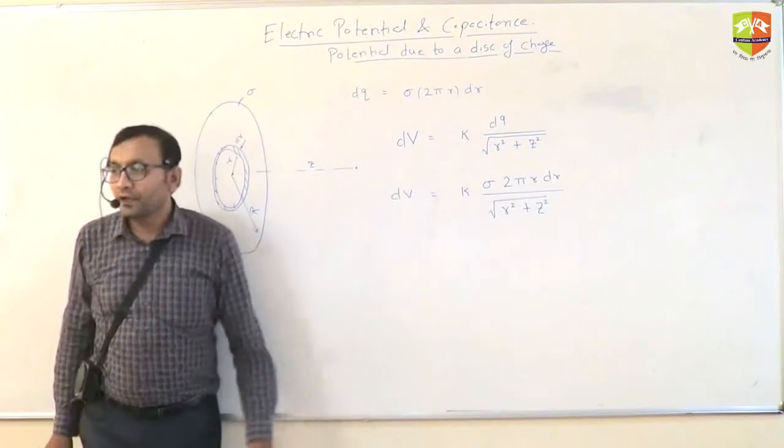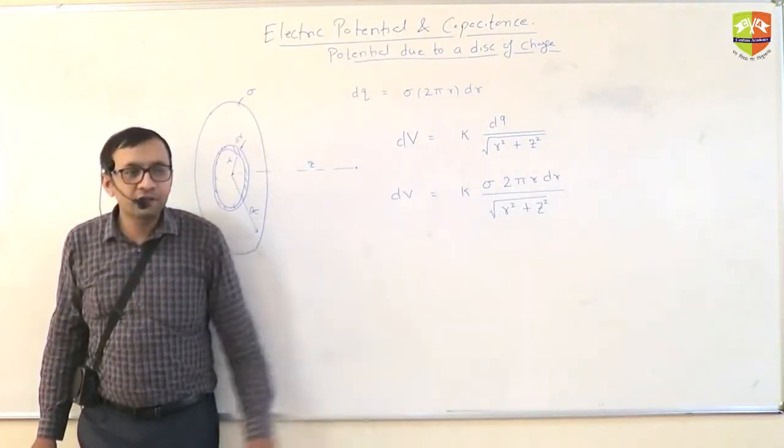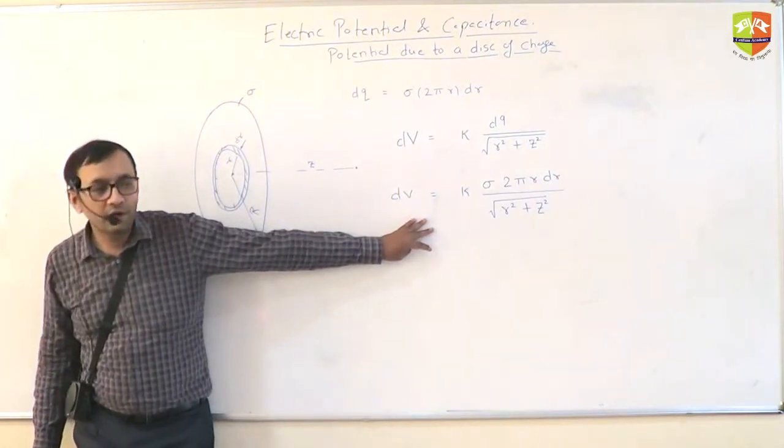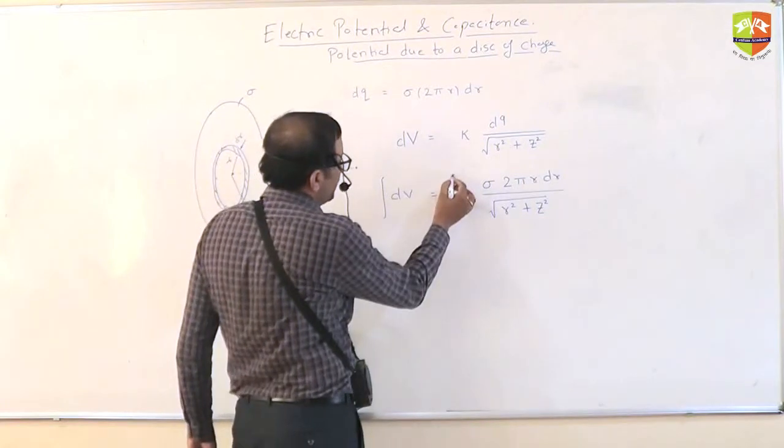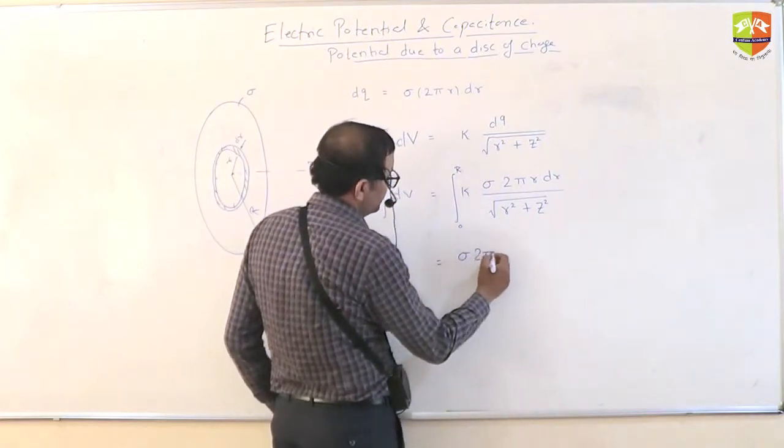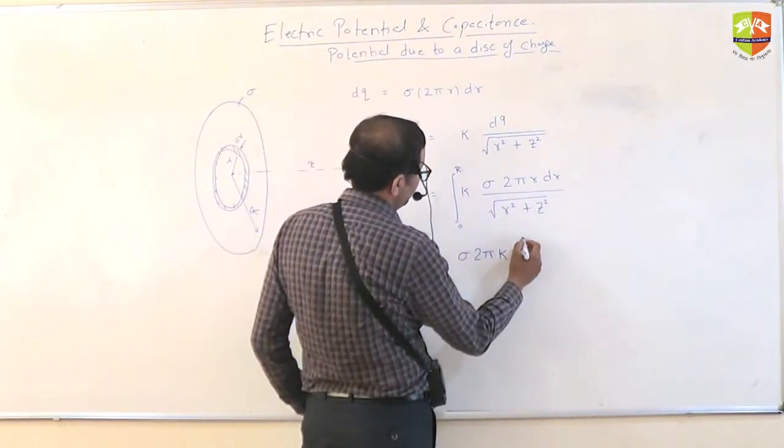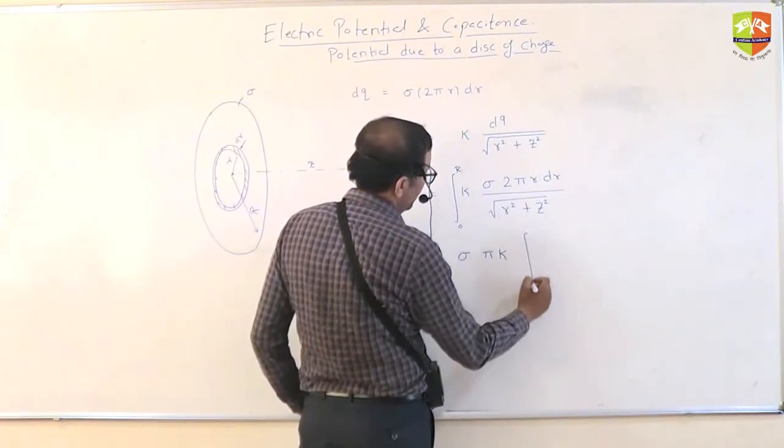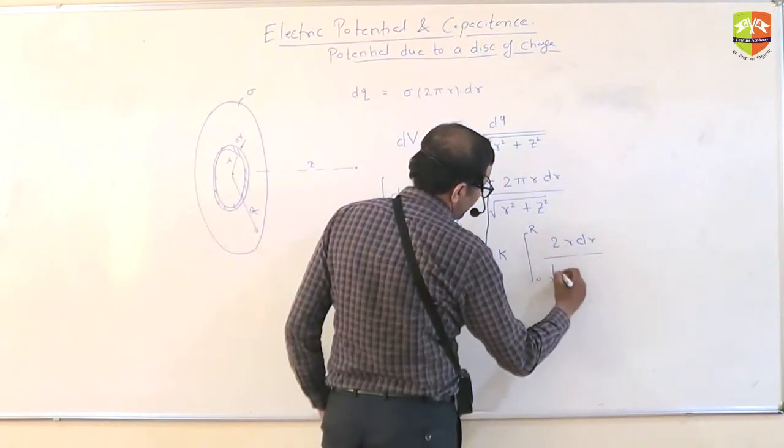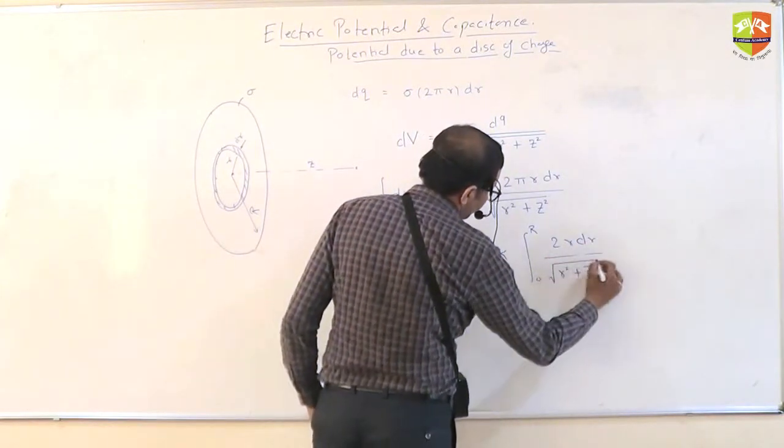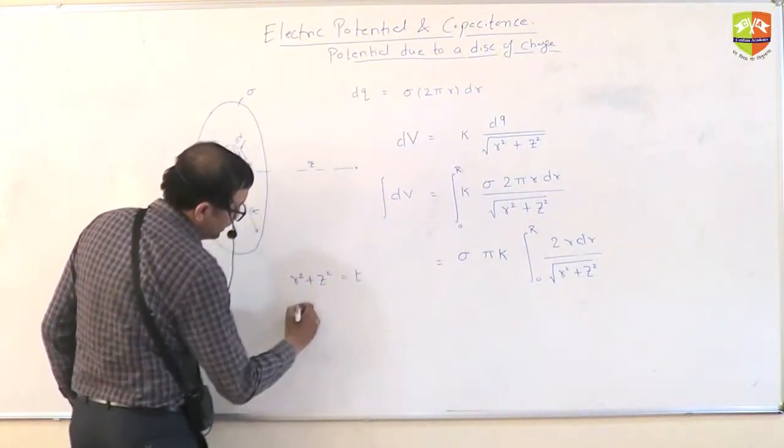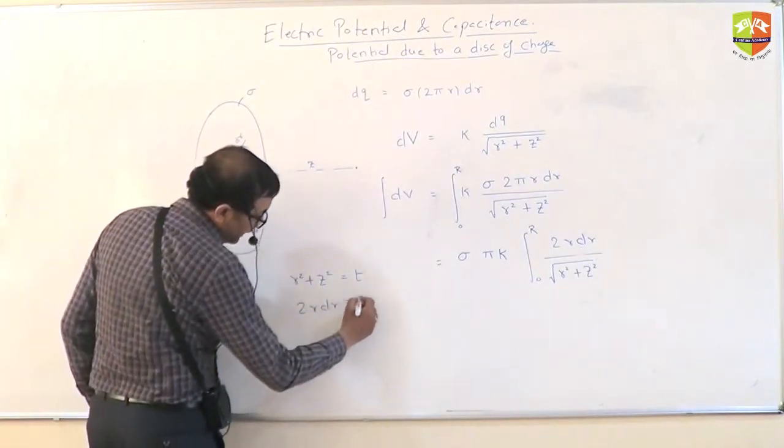This is my d in terms of r. Total potential will be what? Integral of this. So, when you integrate, you get the total potential. The limits will be from 0 to capital R. So, sigma into 2 pi into k comes out. Sigma into pi k you just take outside. You get 0 to r. 2 r dr divided by root over r square plus z square. Now, if you assume r square plus z square as t, you get 2 r dr as dt.